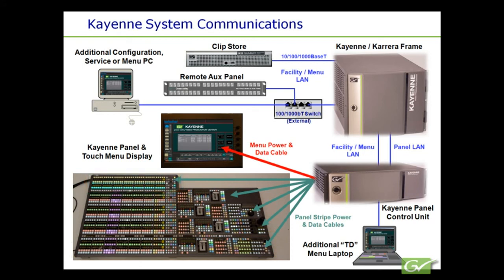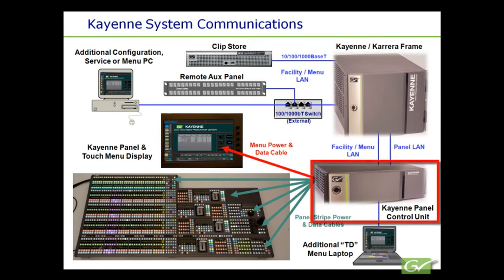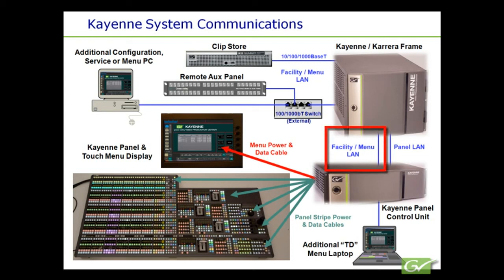The menu has a different dedicated cable, also connected to the PCU, that supplies power and control for the touchscreen display and soft knobs. The PCU has a built-in gigabit Ethernet switch that connects to the frame and to any additional Ethernet devices, such as additional menu computers. The menu data is carried over the facility/menu LAN connection. A separate dedicated panel LAN cable is connected from the PCU to the frame for panel communications from the stripes. This keeps the facility LAN data traffic and panel data traffic isolated. There are a total of four Ethernet connections on the rear of the frame that can be used for additional devices, including the two dedicated Ethernet LAN connections to the PCU.